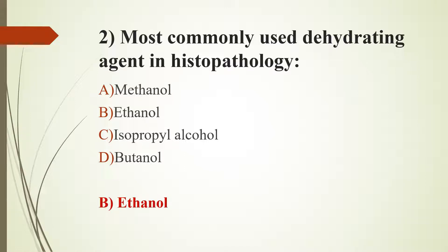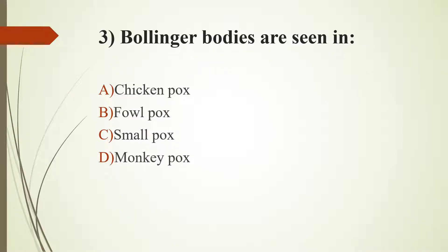Third question: Bollinger bodies are seen in which option? Option A, chicken pox. Option B, fowl pox. Option C, small pox. Option D, monkey pox. The answer is Option B, fowl pox.